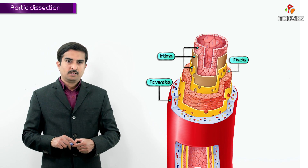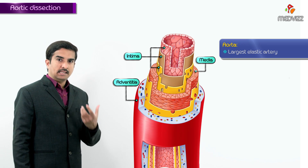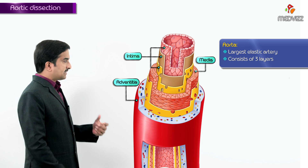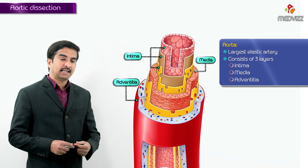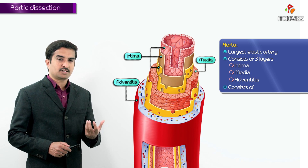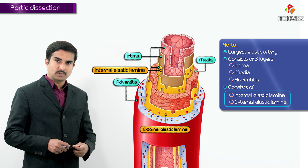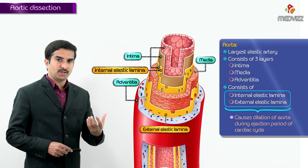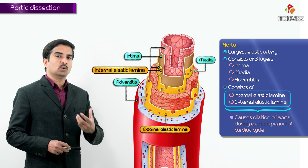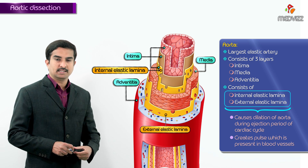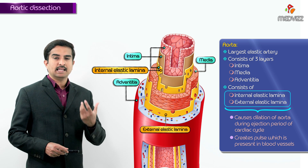We will see what exactly this definition means by examining the different layers of the aorta. The aorta is the largest artery and it is an elastic artery, so it has intima, media, and adventitia like all other arteries. Being an elastic artery, the importance of the aorta is the presence of internal as well as external elastic lamina, which creates the pulsatile beat of these arteries during the ejection period of the cardiac cycle.